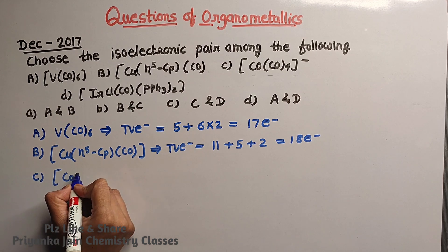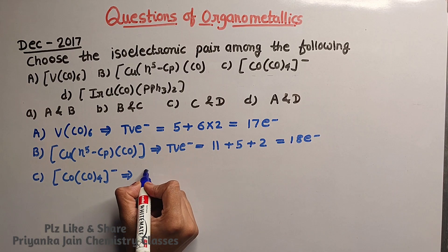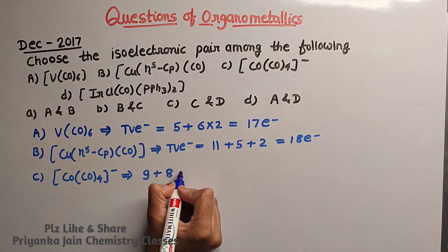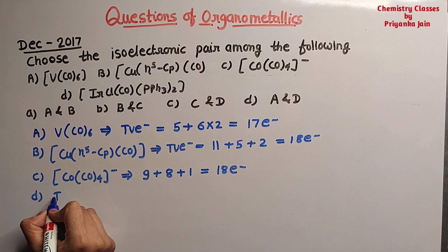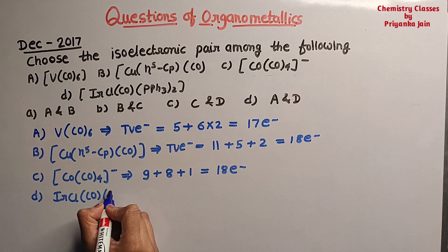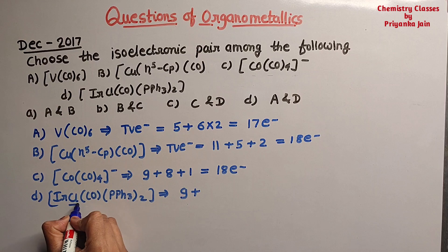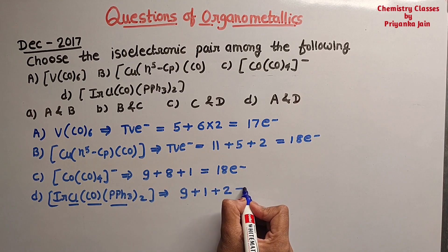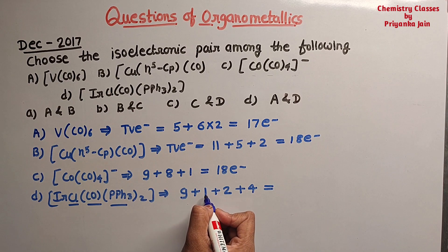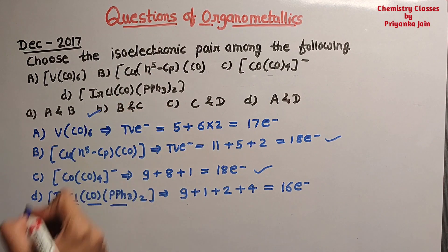For Co(CO)4⁻: cobalt has 9 electrons, plus 8 from four carbonyl ligands, plus 1 electron from the negative charge, giving 18 electrons. For IrCl(CO)(PPS3)2: iridium has 9 electrons, chloride donates 1 electron, CO donates 2 electrons, and 2×2 = 4 from two PPS3 ligands, giving 16 electrons — a 16-electron species. The Cu complex and Co(CO)4⁻ both have 18 electrons, so the answer is option B and C.